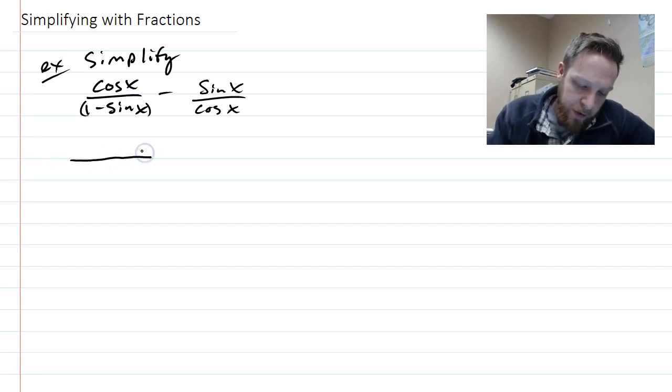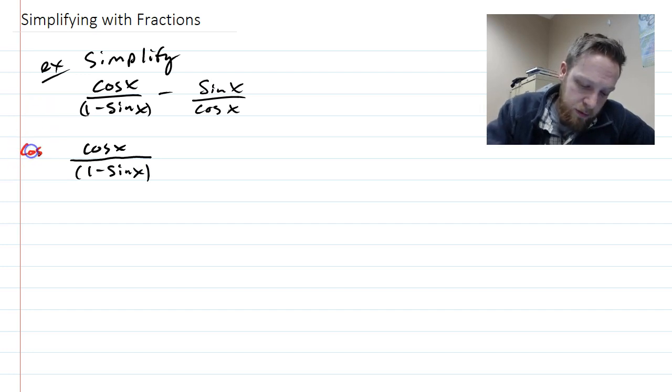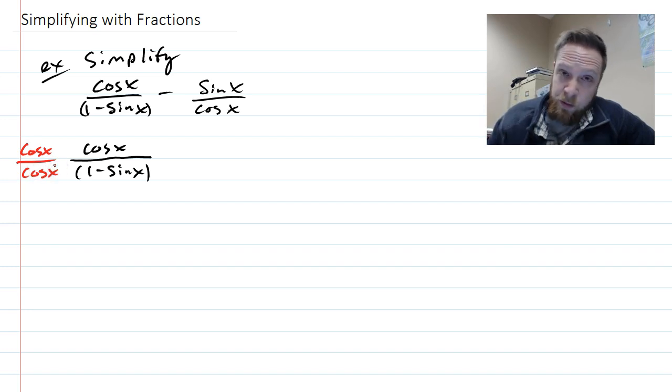So my common denominator, like over here, I think I already have a one minus sine x. I've got to multiply by cosine over cosine. And now my denominator will be cosine x times one minus sine x.